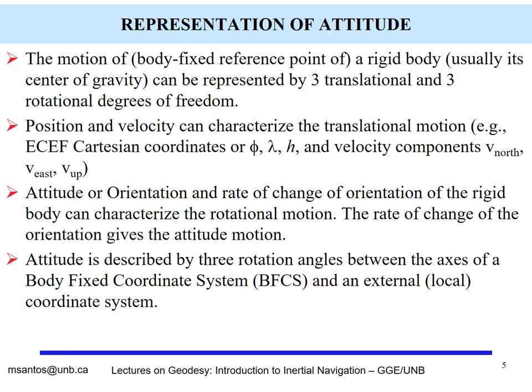How are we going to represent attitude? We are going to represent the attitude of this rigid body, which is our moving platform. We can think of position and velocity characterized in translational motion. For example, you can think of earth-centered, earth-fixed Cartesian coordinates x, y, z, or their counterparts latitude, longitude, and height. The velocity components are usually given along the local north, local east, and up components.